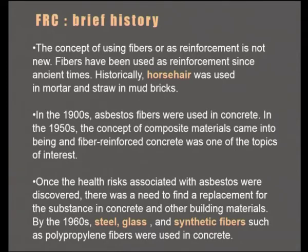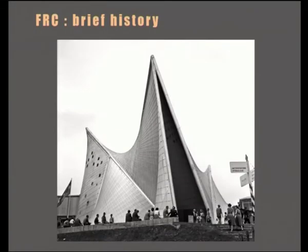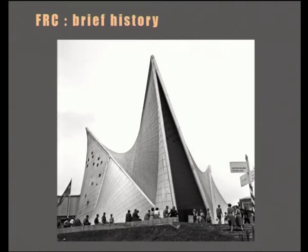After horse hair, the development led to asbestos being used for fiber additions. However, asbestos was found to be very hazardous in terms of health concerns and was replaced by the fibers used today: steel, glass, and synthetic fibers apart from natural fibers. One famous early example is the Phillips Pavilion, an exhibition pavilion associated with Le Corbusier's office, actually designed by Xenakis. It is a prime example of music converted to architecture and a very documented and modern use of fiber reinforced concrete.